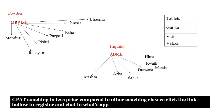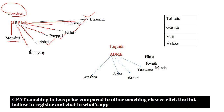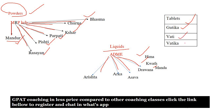For powder-form medicines in Ayurveda, remember the mnemonic 'MRP': Mandur, Rasa, Pishti, Pravahi, Kasara, Churna, Bhasma — all are powders in the Ayurveda system. For liquid medicines, remember 'ADME': Arishta, Arka, Asava, Dravana, Hema, Kwath, Manda — these are examples of liquids. Tablets in Ayurveda are called Gutika, Vati, or Vatika. I hope you enjoyed this — thank you and have a great day!